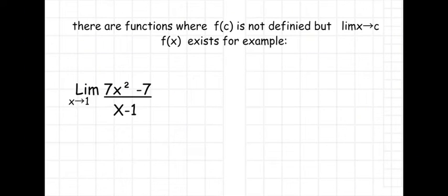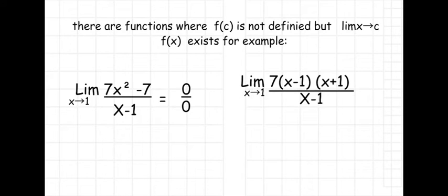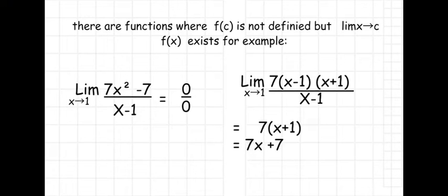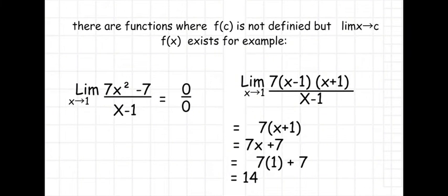For the limit of (7x² minus 7) over (x minus 1) as x approaches 1, we need to factor out this indeterminate 0/0 form. The factor becomes the limit of 7(x minus 1)(x plus 1) over (x minus 1), which equals 7(x plus 1). This becomes 7x plus 7. Substituting x equals 1 gives 7 times 1 plus 7, so the answer is 14. As you can see, the limit of f(x) is not always equal to infinity.